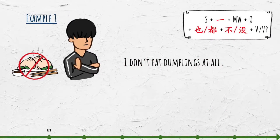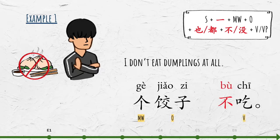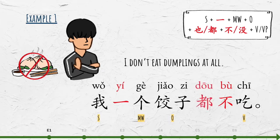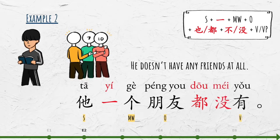For example, 'I don't eat dumplings at all.' Dumplings: 饺子. The measure word for dumplings: 个. Don't eat: 不吃. 我一个饺子都不吃. 'He doesn't have any friends at all.' 他一个朋友都没有.